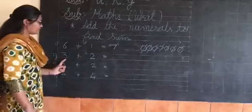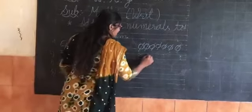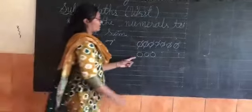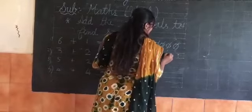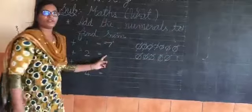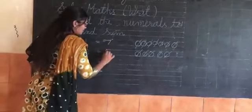Which number is this? Three. So make here three circles. One, two, three. Then two, so make here two circles. Then count together. One, two, three, four, five. So answer is five. Write here five.